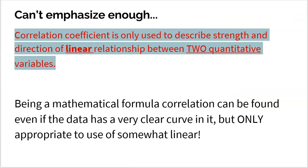Last thing here. Can't emphasize this enough. Correlation coefficient is only used to describe the strength and direction of a linear relationship between two quantitative variables. So again, it is positive or negative. So it does describe direction. It's got to be linear. If there's a curve, don't ever use it. Just be silly. So you do need to look at your scatter plot and make sure there's no curve into it. And your two variables must be quantitative or else you're just a fool. Being a mathematical formula correlation can be found even if the data has a clear curve in it, but it's only appropriate to use if your data is somewhat linear. We're not asking for a perfect straight line here, but your data has to be somewhat linear for you to ever use correlation. So correlation is going to give us a much better way to measure the strength of a relationship between two quantitative variables. It's on the scale from negative one to one. And the closer we get to those ends, the stronger that relationship. So that's it for correlation. Hopefully you learned a lot here about how to measure the strength of a linear relationship.